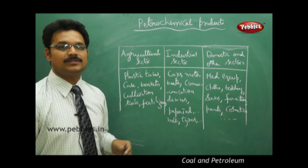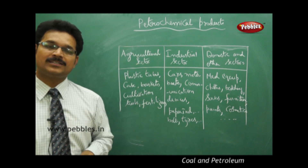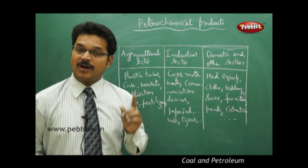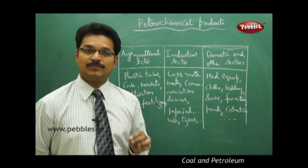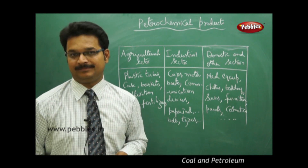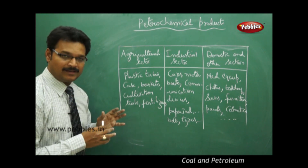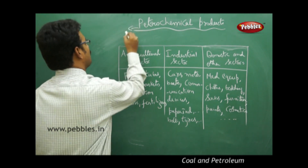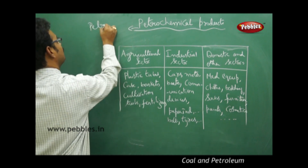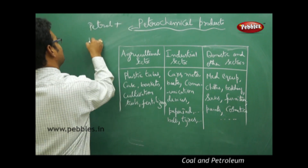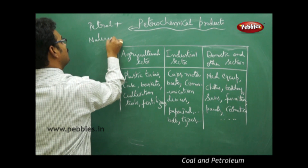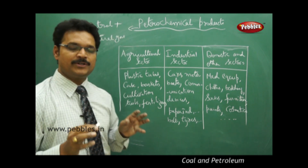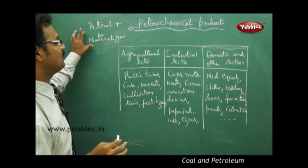Now we're seeing another table showing the wide uses of petrochemicals. The first point is: what is a petrochemical? I already mentioned that petrochemical is a product coming from petroleum. The main definition of petrochemical is that it is the combination of petrol plus natural gas.